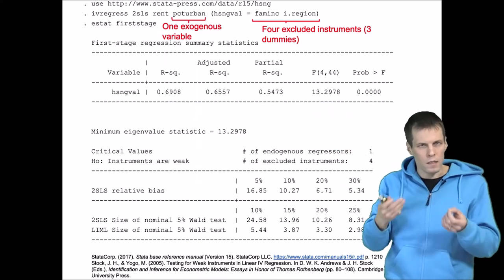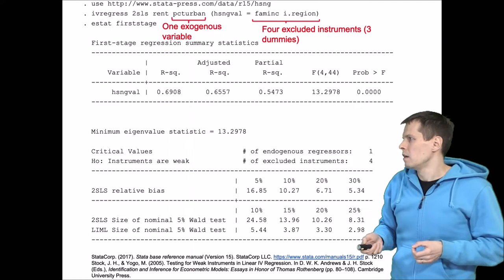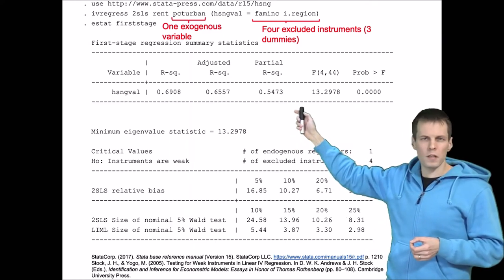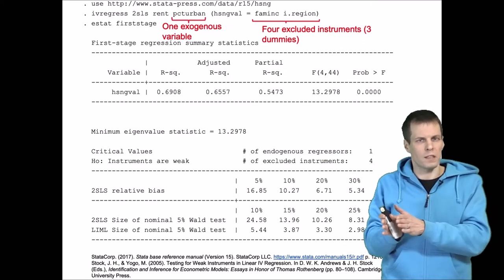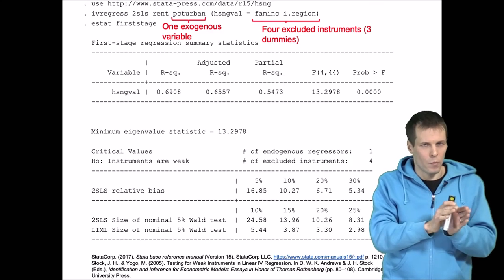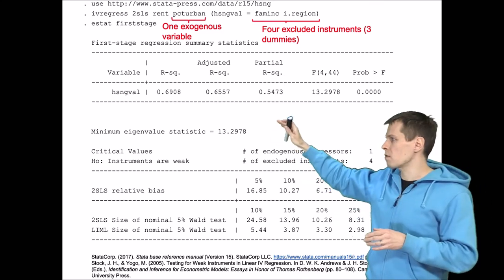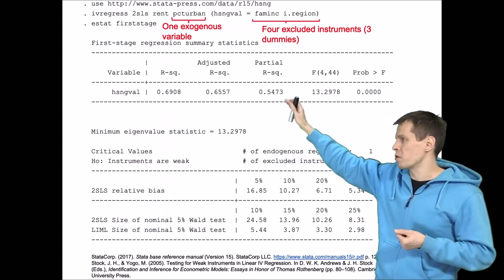The instruments are excluded because they are not used as predictors of rent. So in the first stage regression analysis, we regress the endogenous variable on the instruments that are excluded and the exogenous explanatory variables. So this first stage regression analysis has five predictors: three dummies, family income, and percent urban.